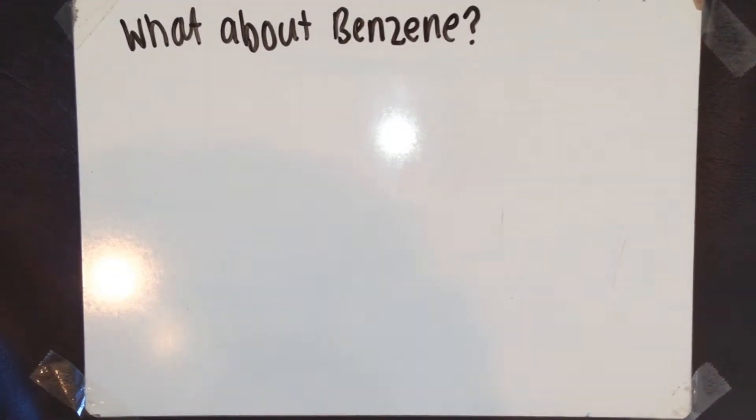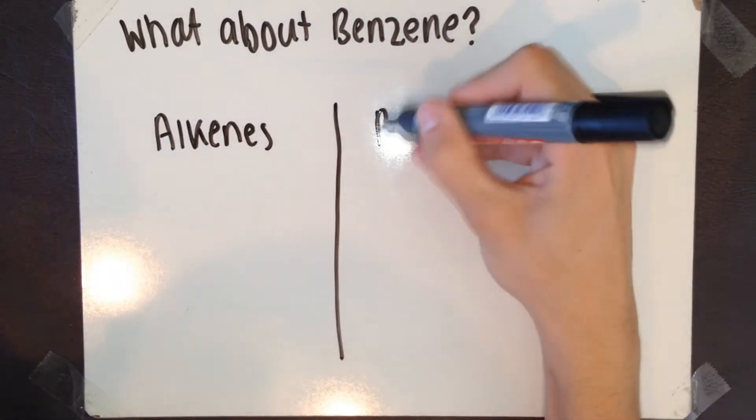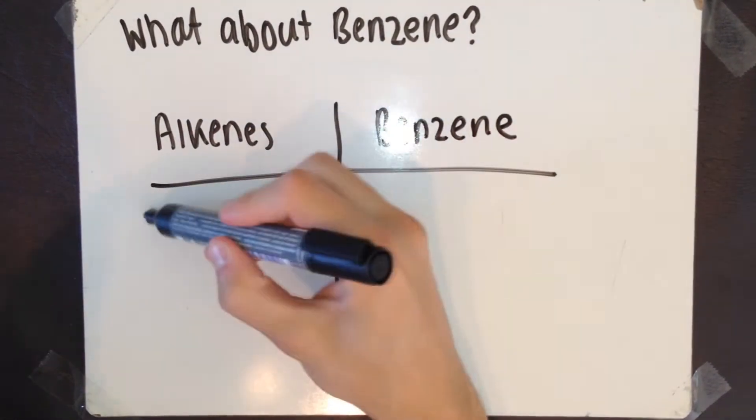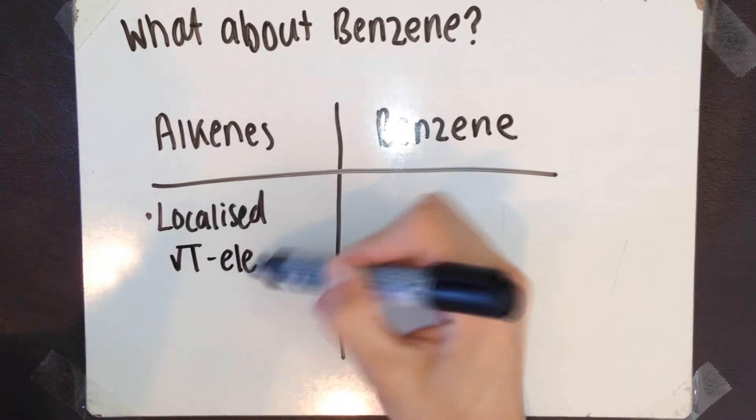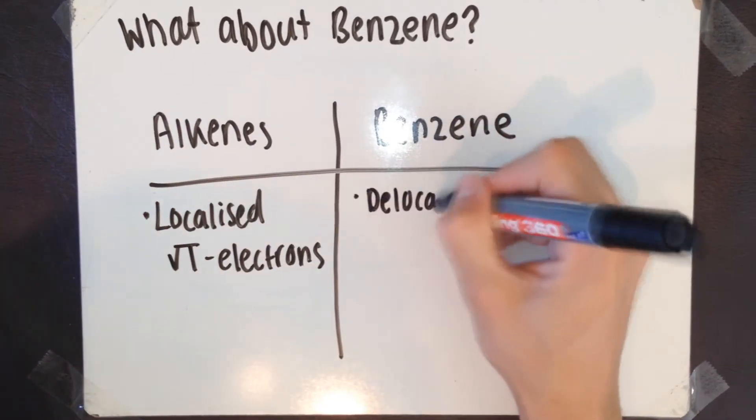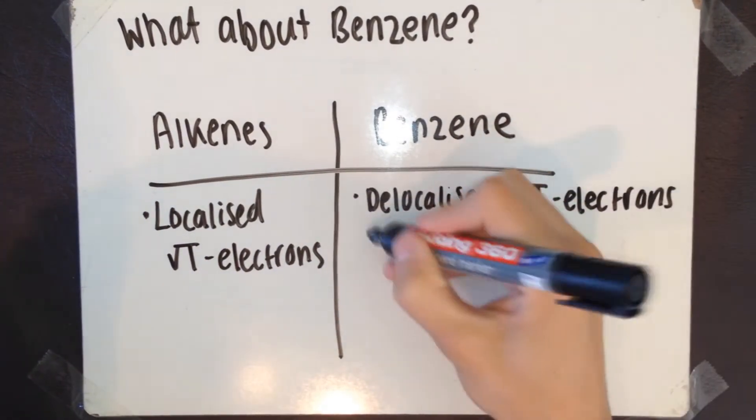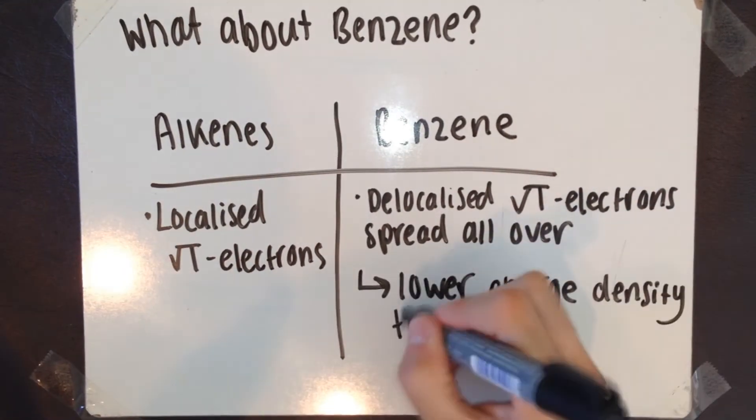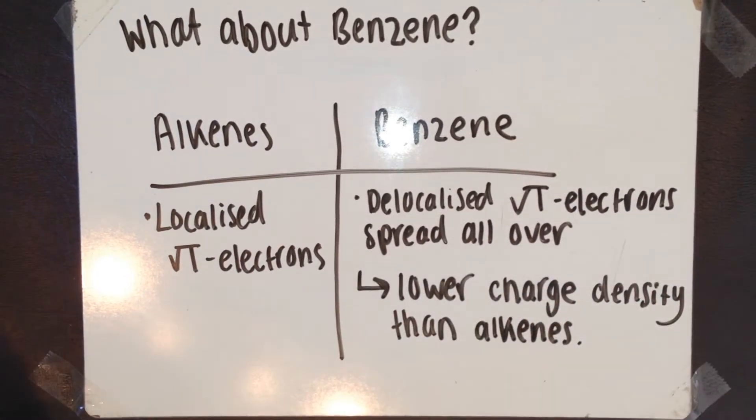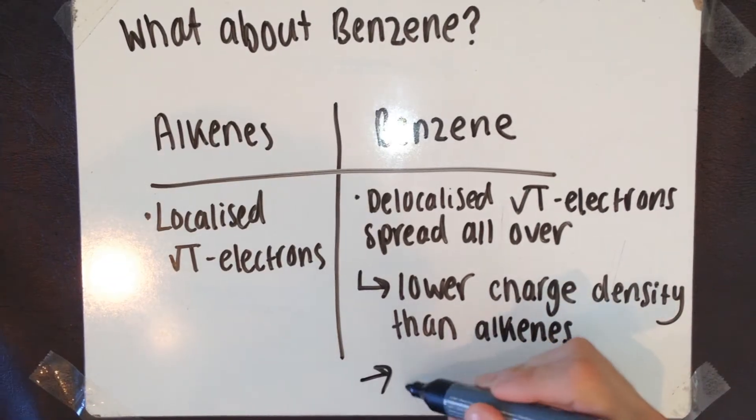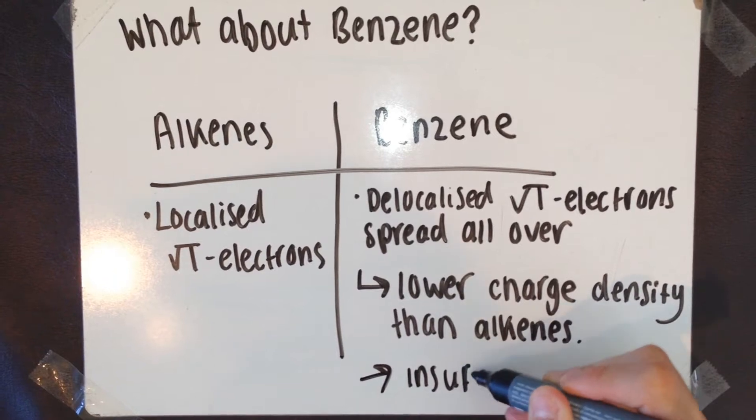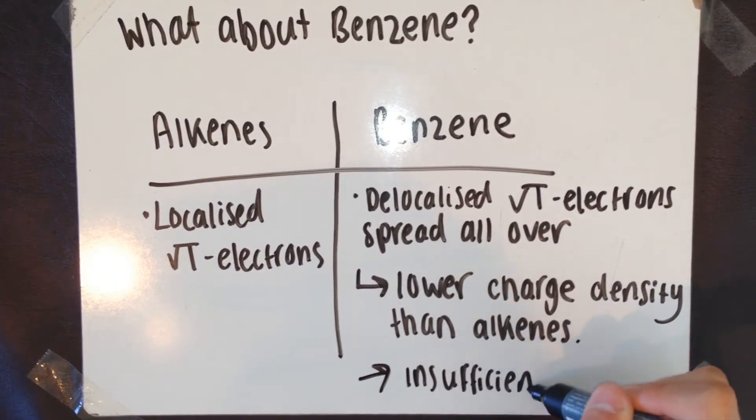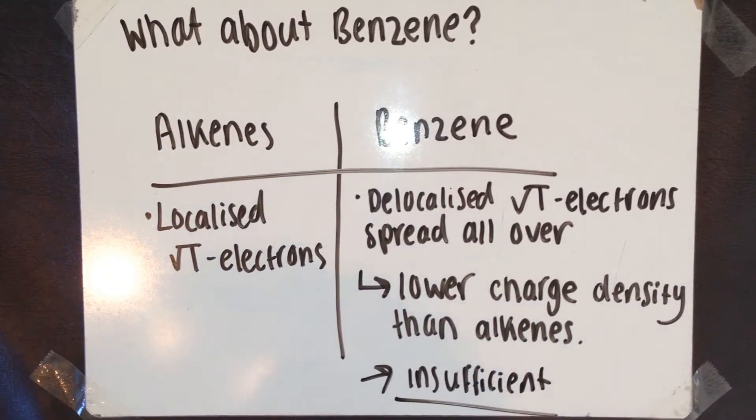What about benzene? Why can't benzene do this? I'm going to draw a quick chart to show the differences between alkenes and benzene. Alkenes have localised pi electrons, whereas benzene has delocalised pi electrons. These electrons are spread over the whole ring in benzene. This gives benzene a lower charge density than alkenes. The whole stability and unreactivity of the benzene ring is caused by the delocalisation of these electrons. The halogen can't be polarised efficiently, and a reaction doesn't occur.